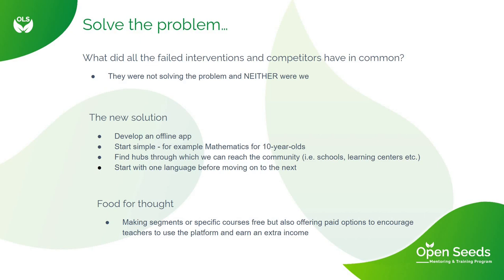We also need to start simple — for instance, one course on mathematics for 10-year-olds and develop from there. We also identified several hubs we can reach out to in order to get community engagement, and who will ultimately use the resource once developed and be able to communicate its availability to the community when we are unable to reach them. We also identified that we need to start with one language first and move from there — starting with all 12 languages would simply not be a viable solution.